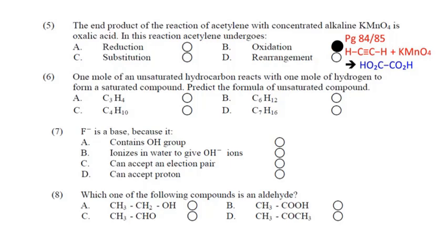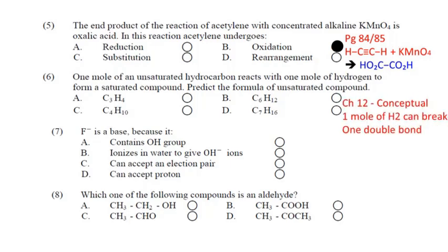Question number 6: One mole of an unsaturated hydrocarbon reacts with one mole of hydrogen to form a saturated compound — predict the formula of the unsaturated compound۔ یہ conceptual ہے، chapter 12 سے ہے۔ One mole of hydrogen can break only one double bond، تو یہاں one double bond صرف B کے اندر ہے: C₆H₁₂ — answer is B۔